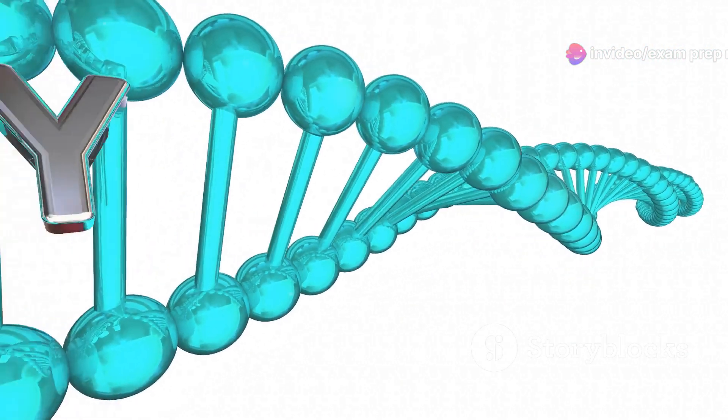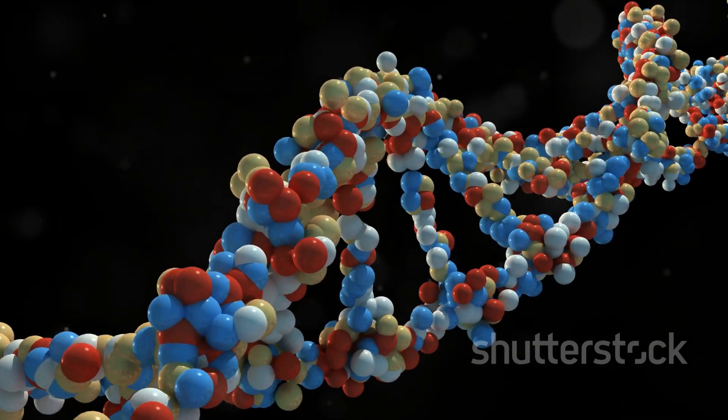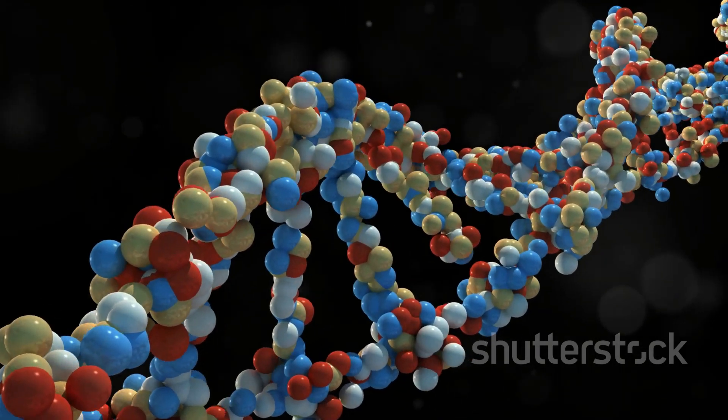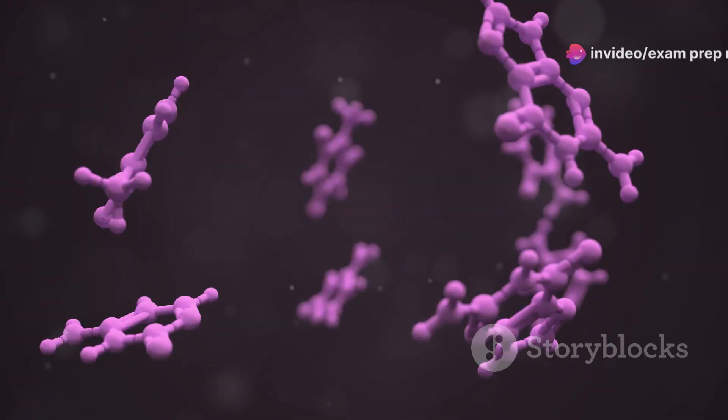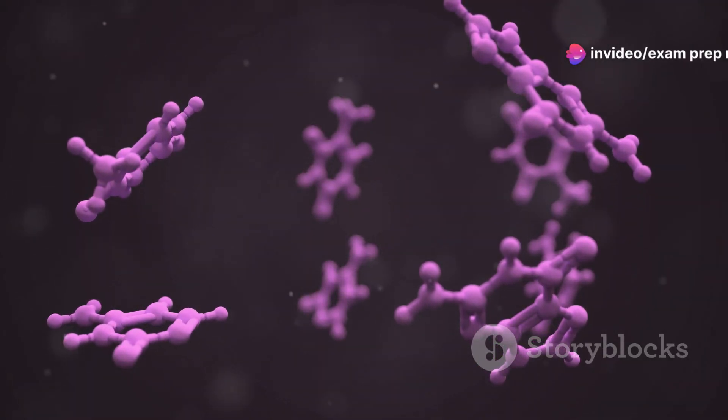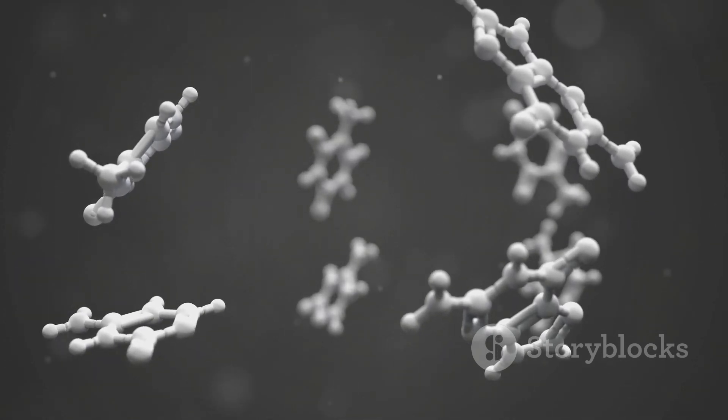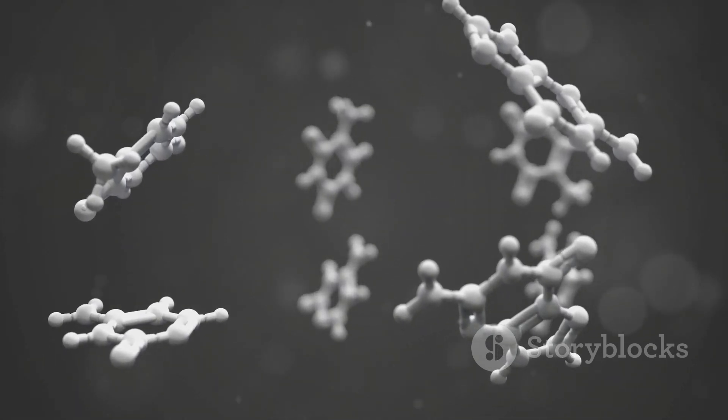The rungs of the ladder are formed by pairs of nitrogenous bases, the building blocks of genetic code. These bases are like the letters of an alphabet, spelling out the instructions for life. There are four types of bases in DNA: adenine (A), thymine (T), guanine (G), and cytosine (C). Each base has a specific partner, ensuring the code is read correctly.